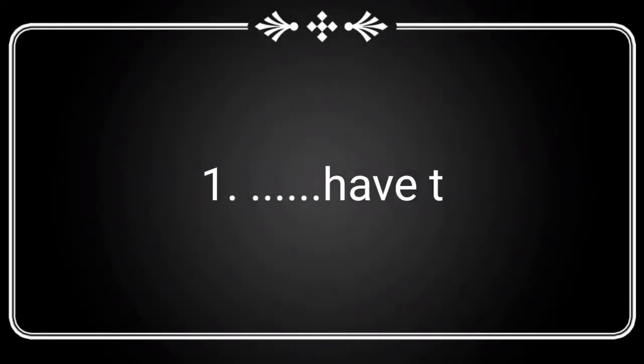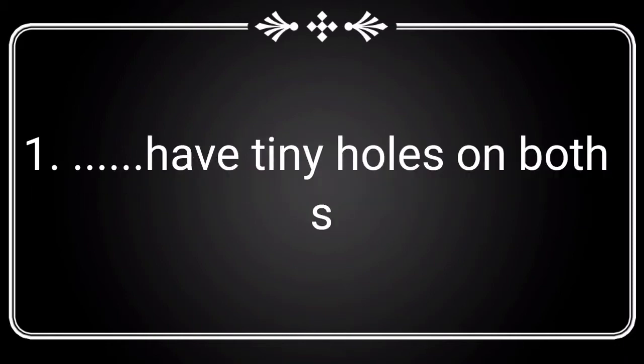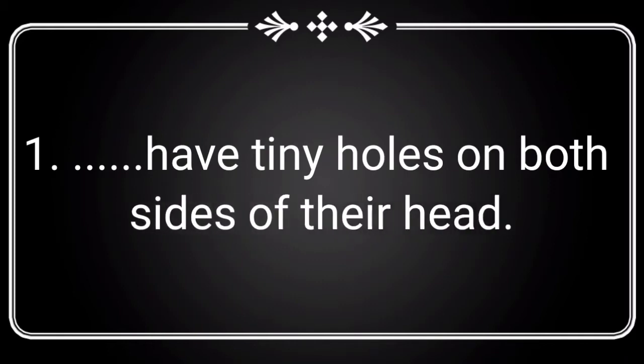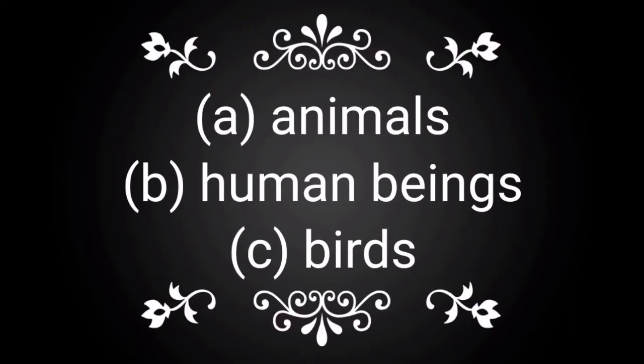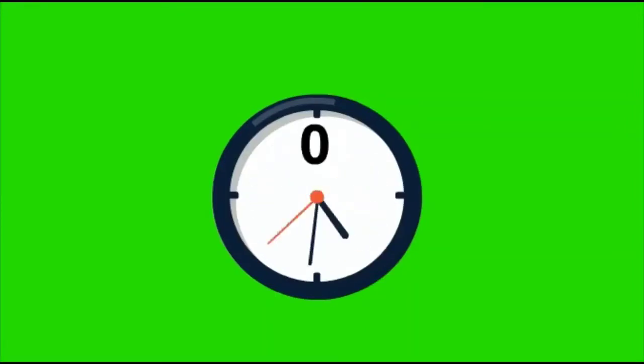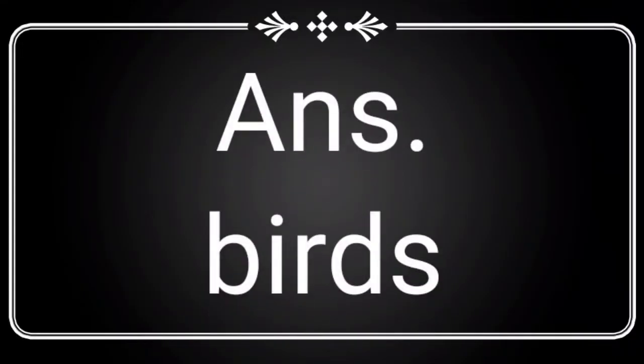Question number 1: Which animals have teeny holes on both sides of their head? You have three options — Option A: animals, Option B: human beings, Option C: birds. Think the correct answer within 10 seconds. The correct answer is birds. Yes, birds is the correct answer for this question.